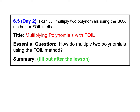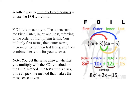So let's go ahead and get started. Another way to multiply two binomials is to use the FOIL method. FOIL is an acronym — the letters stand for First, Outer, Inner, and Last, and that refers to the order in which we multiply the terms. In this example, the First is the first part of the first binomial times the first part of the second binomial — that's 2x times 4x, which is 8x squared. The Outer is 2x and negative 5, on the outside of the polynomials. The Inner is the two terms on the inside, and the Last is the last part of each polynomial — 3 times negative 5.